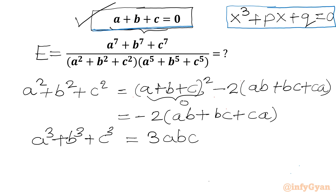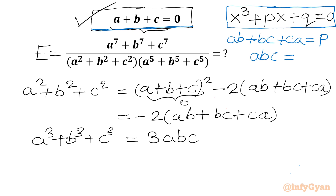Now, sum of roots taken two at a time: AB plus BC plus CA. This value will be equal to the coefficient of X over the coefficient of X cubed, so it will be P. The product of roots will be the constant term over the leading coefficient with a minus sign, so it is minus Q.